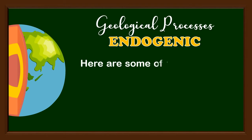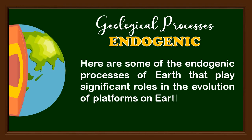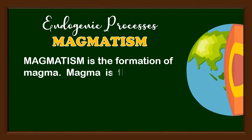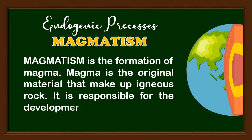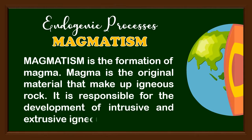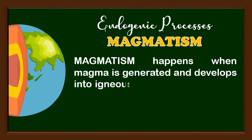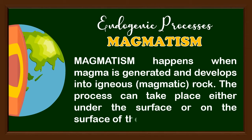Here are some of the endogenic processes of Earth that play significant roles in the evolution of landforms on Earth. First is magmatism — the formation of magma. Magma is the original material that makes up igneous rock, and it is responsible for the development of intrusive and extrusive igneous rocks. Magmatism happens when magma is generated and develops into igneous magmatic rock, and the process can take place either under the surface or on the surface of the Earth.